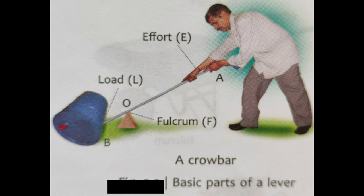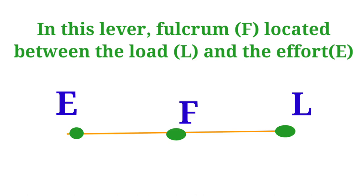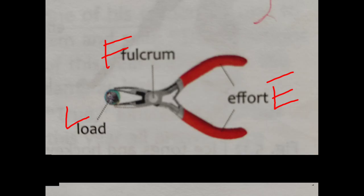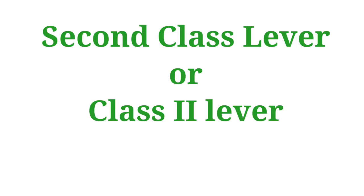In a first class lever, the fulcrum is located between the load and the effort. Here is a diagrammatic presentation: first class lever examples include pliers, see-saw, crowbar, and pairs of scissors. In the diagram you can see the load at one end, effort at the other end, and the fulcrum in between. Remember that the first class lever always has the fulcrum in between.